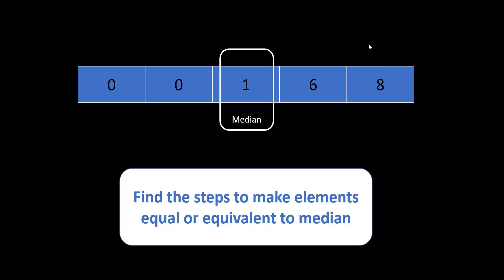The middle element of this array is 1. So this becomes median and now we need to calculate the steps to make each and every element equivalent to this particular median element. For 0 we need to add 1 to make it equivalent to the median element. For 6 we need to decrement this number by 5 and for 8 we need to subtract 7. This subtraction or addition of numbers is equivalent to the steps we are taking to make the array equal.